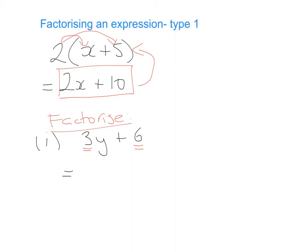The highest number that both 3 and 6 are divisible by is 3. They don't have any letters in common, so we put 3 on the outside of a bracket: 3 multiplied by what gives me 3y? That's y. And 3 multiplied by what gives me +6? That's +2. So the answer is 3(y + 2). To test yourself, multiply back out: 3 × y = 3y and 3 × 2 = 6.